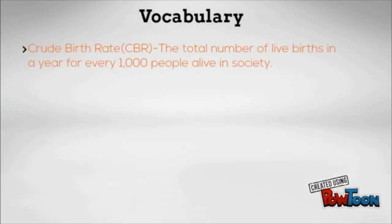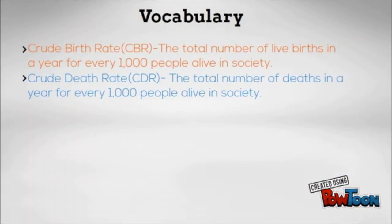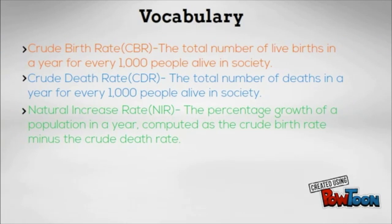There are three words you may need to know during this video. The first is crude birth rate, also known as CBR. This is the total number of live births in a year for every 1,000 people alive in the society. A crude birth rate of 20 means that for every 1,000 people in a country, 20 babies are born over a one-year period.